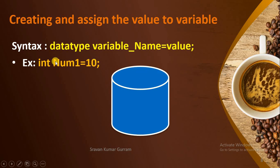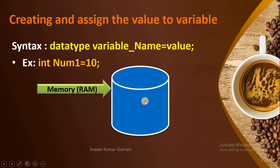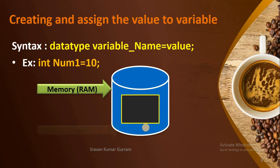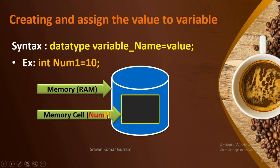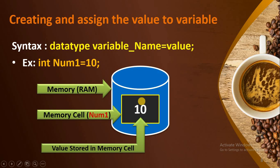Now let us understand what happens internally when we write a statement. Primary memory or RAM is a collection of different cells. Every cell has a unique address. As a developer, it is very difficult to remember this unique address, so we give a name to that address for easy identification — that is the variable name. In this example, for this cell, I am giving the name num1. When we assign the value 10, that value will be stored within this memory cell.